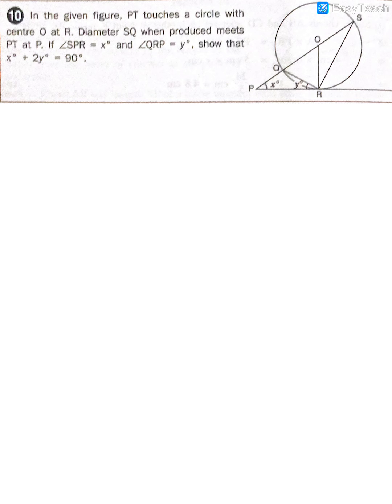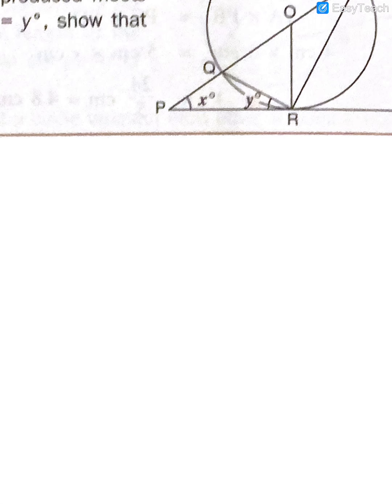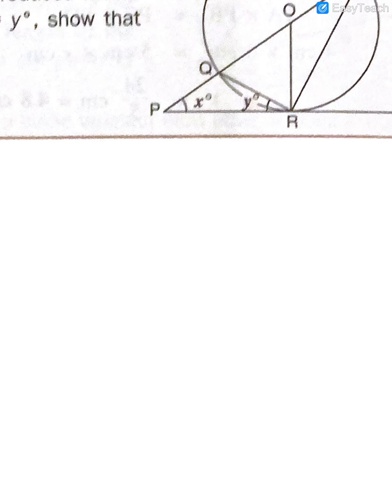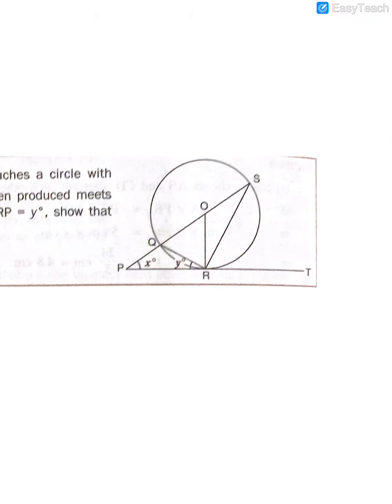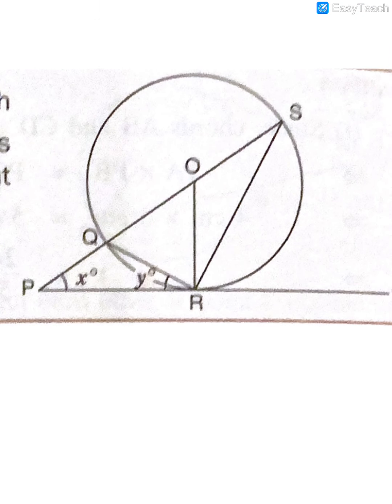Next problem: you have to prove that x + 2y = 90°. You may pause and try it first. I'm using the shortest method, so listen carefully.